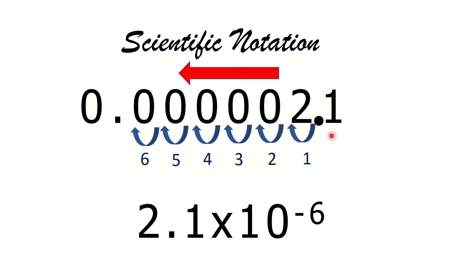2.1 is from here, times the base which is 10. Exponent is negative 6 because the number of decimal places would be 6. Do you understand? Okay, very good. Next.